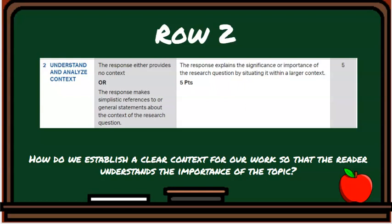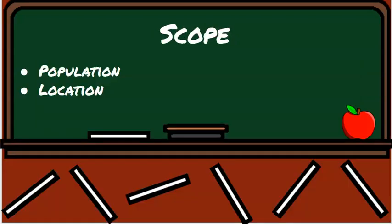So how do we go about doing that and making sure that we're doing it to a significant degree so the AP reader can give us the points?